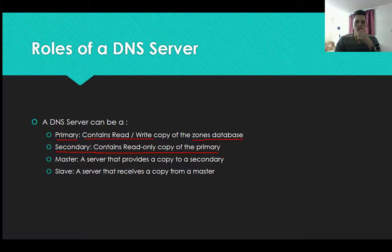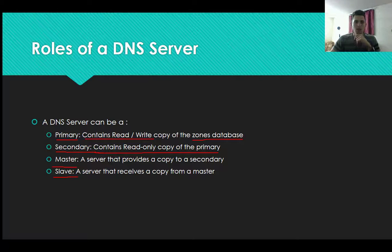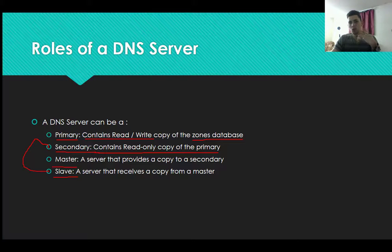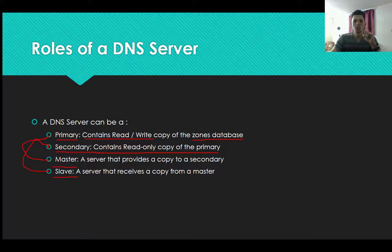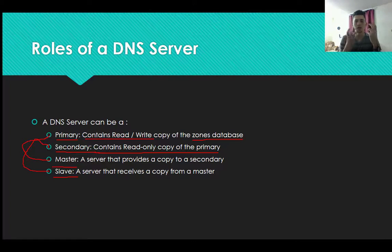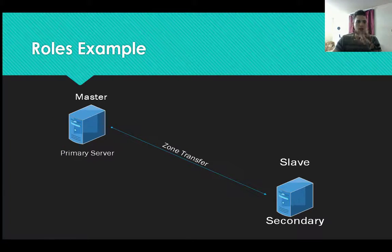A master DNS is a DNS server that sends copies to another DNS server. A slave DNS is a server that receives copies from the master. So a slave is kind of interconnected with secondary because it receives copies, and a master is kind of interconnected with primary. The difference is that a primary has the read and write zone database, whereas a master only sends copies to another DNS server. Let's see an example.